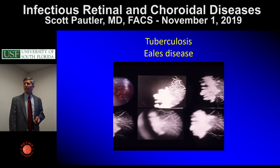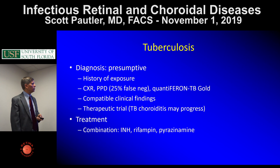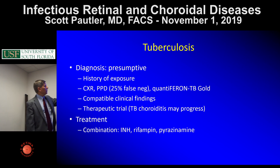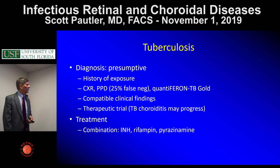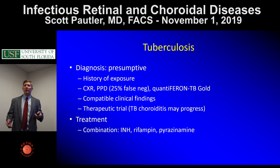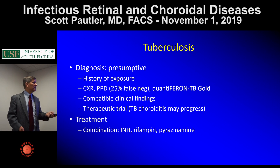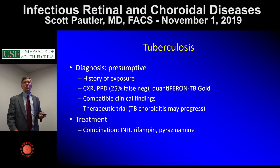TB granuloma can present as a choroidal mass — you'd think tumor, but also sarcoidosis and TB. Keep granuloma in mind with choroidal mass lesions. TB uveitis is a presumptive diagnosis; elicit history of exposure, noting that about 25% test false negative with PPD. Quantiferon is usually used. Sometimes you have to do a therapeutic trial for three months to see if the patient responds, since a positive exposure test doesn't confirm uveitis is from TB.